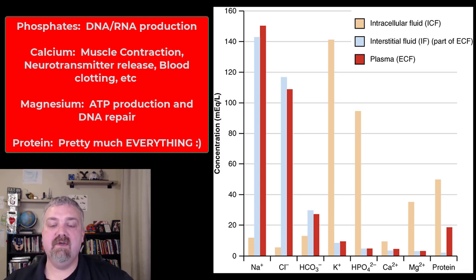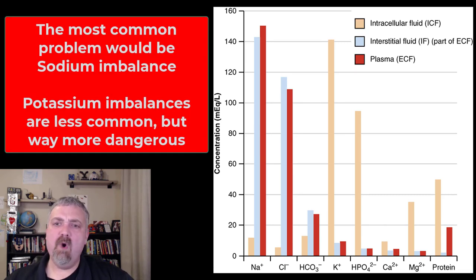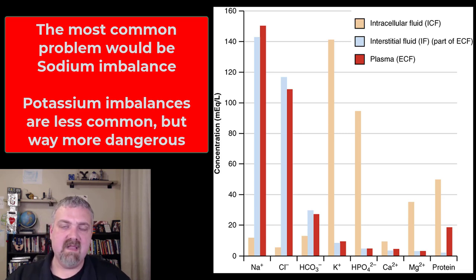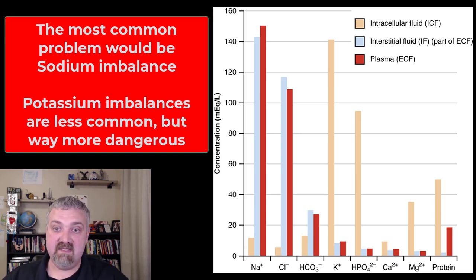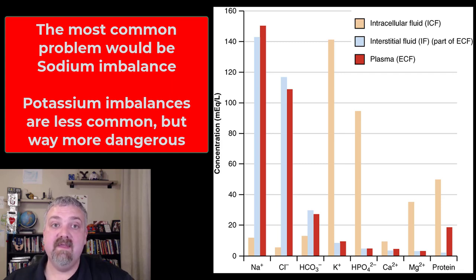Those are the key functions of each of the ingredients that make up your intracellular fluid and your examples of extracellular fluid. The most common problems are going to be an imbalance of sodium gains and losses — either a really high sodium diet where you're bringing in more than you're losing, or you're sweating a lot and losing more than you're bringing in. Potassium imbalances are a lot less common, but much more dangerous. Too much or too little potassium is much more potentially fatal than sodium issues.